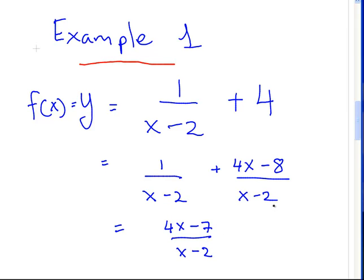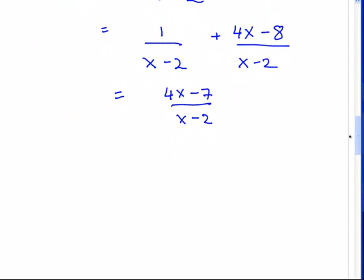The numerator part here is 4x minus 7 and the denominator here is x minus 2. So what I'm going to do here to find the vertical asymptote is set x minus 2 equal to zero. That is to say x is equal to 2.